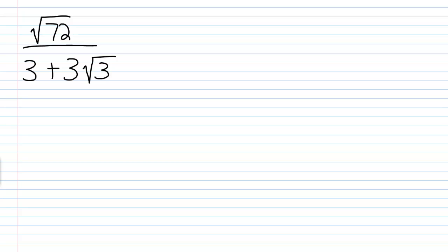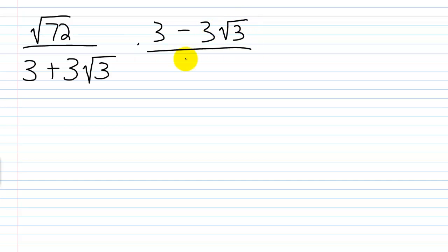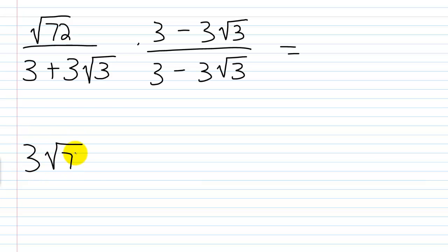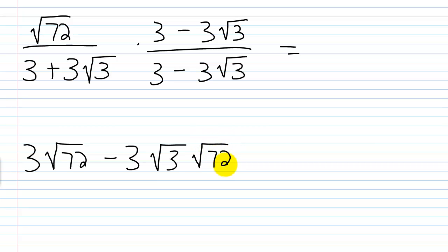Let's look at this last one: square root of 72 over 3 plus 3 times the square root of 3. Again, I want to multiply by the conjugate, which is 3 minus 3 times square root of 3. In the numerator I'll have square root of 72 times 3 — that's 3 times square root of 72 — then minus square root of 72 times 3 times square root of 3. I'm going to leave it as square root of 3 times square root of 72 because I know I can simplify that.